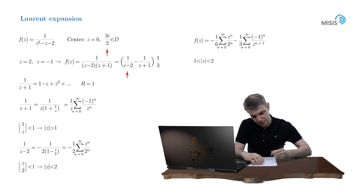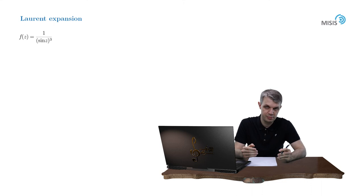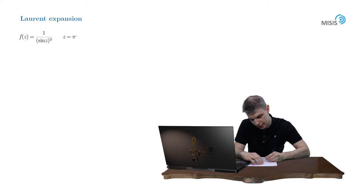So let's consider one more example. f of z equals 1 over sine cubed of z. And the assignment is as follows. We need to find the principal part of the Laurent expansion of this function near point z equals pi n, where n is an arbitrary integer.